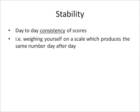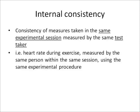Stability is the day-to-day consistency of scores. An example is weighing yourself on a scale which produces the same number day after day. Internal consistency is the consistency of measures taken in the same experimental session, measured by the same test taker. An example is heart rate during exercise measured by the same person within the same session using the same experimental procedure.